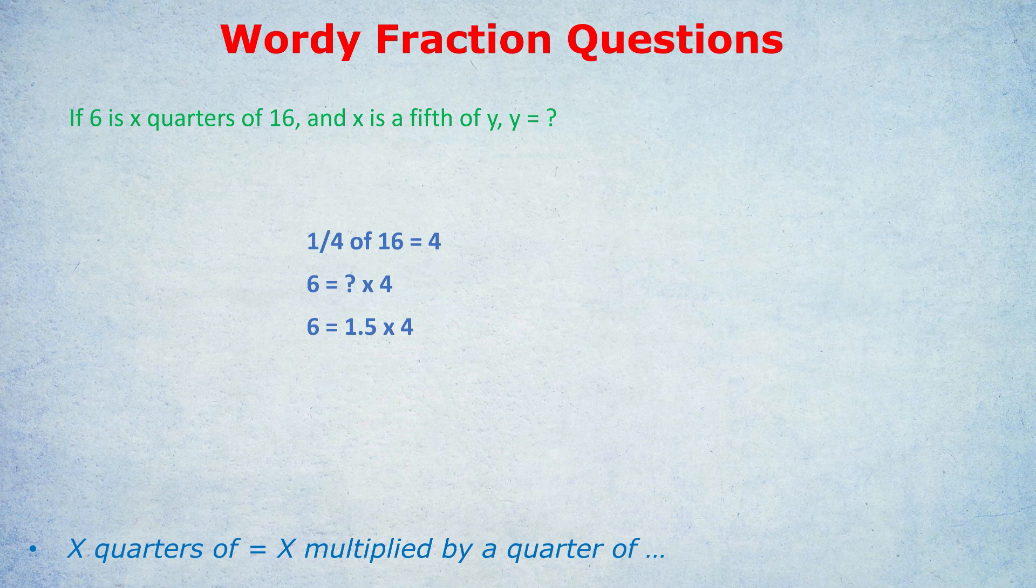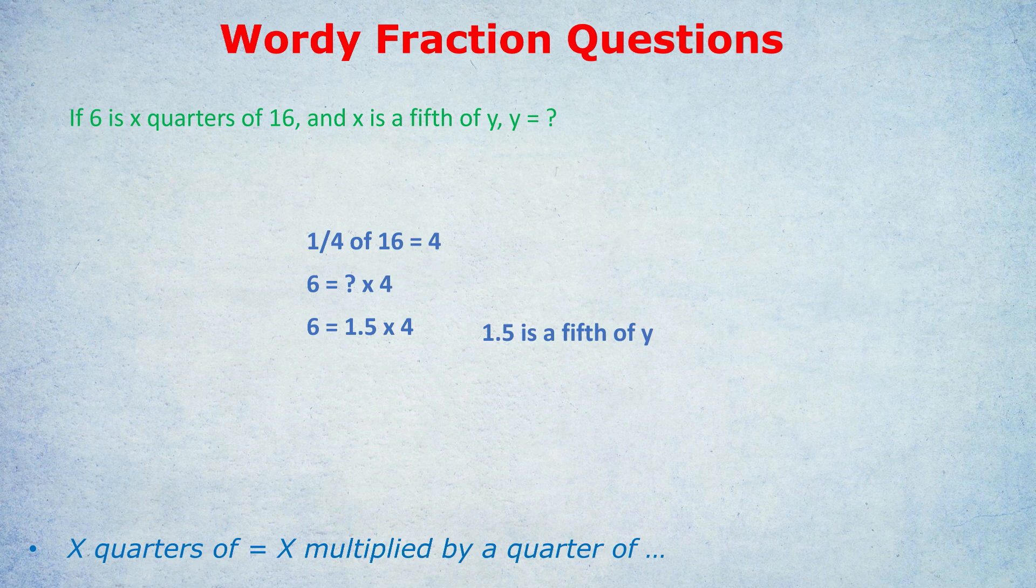Anyway, it turns out x is 1.5, but the question's not quite over. It said x is a fifth of y, meaning 1.5 is a fifth of something. If 1.5 is a fifth of something, that something y must be five times bigger than 1.5. That's how to translate that. You could write an equation if you want: 1.5 equals one fifth times y. Or you could just realize in your head that if 1.5 is a fifth of y, then y is five times bigger. So you just do 1.5 times five. Either way, you work out y is 7.5.